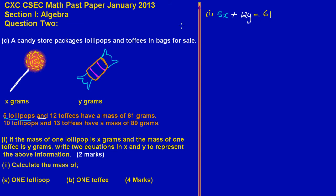In the second sentence: 10 lollipops means 10x, since X represents lollipops. 'And' means to add, so we have plus 13 toffees — Y for toffees — giving us 13y, and that must equal 89. So our two equations are: 5x + 12y = 61 and 10x + 13y = 89. That's an easy two marks.